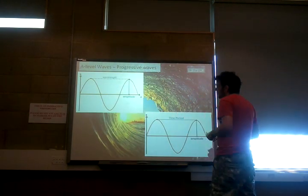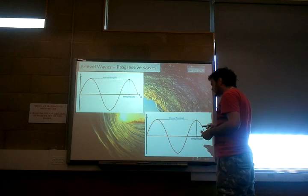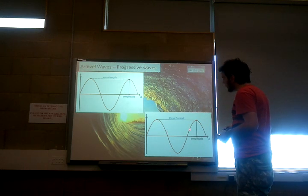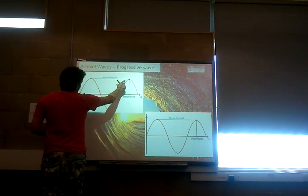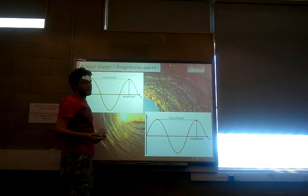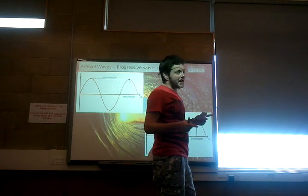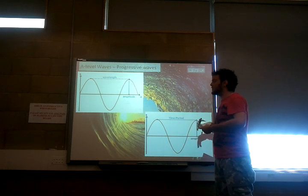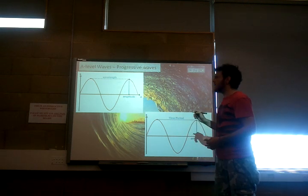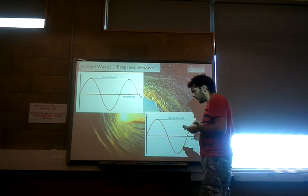Time period is a unit of time for one complete wave to travel past a point, and it's always in relation to one second. For example, if a complete wave passes a point in 0.2 seconds, the time period is 0.2. Generally it's a decimal or percentage of one second.